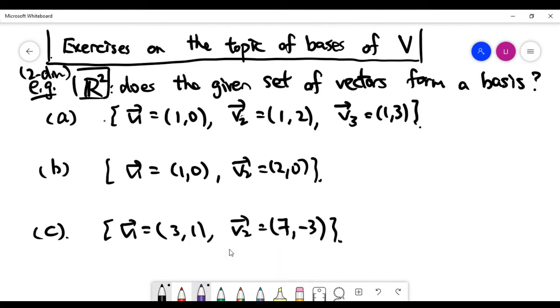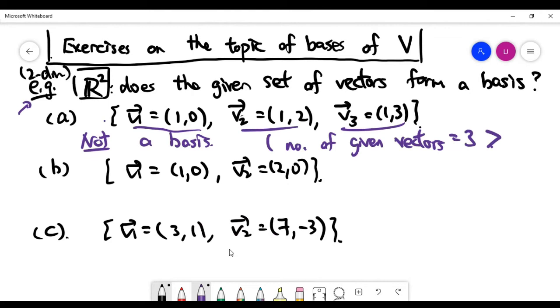Let's look at the first one. You see, we have three vectors, but the dimension of the space is two. We understand that it cannot be a basis of the vector space because the number of given vectors is three, which is bigger than the dimension of the space V. We explained in the last video that for something to be a basis of a vector space, the number of given vectors must be the same as the dimension of the vector space.